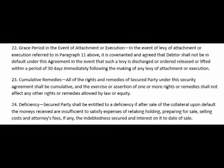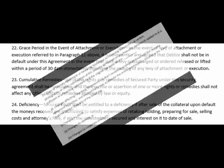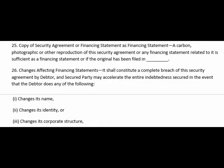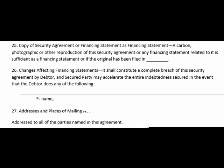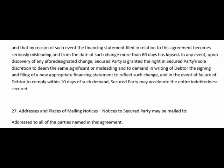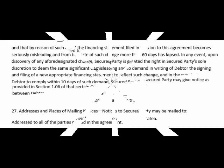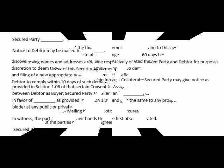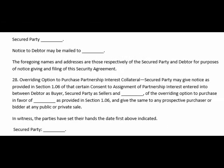In case of transferring the physical possession of anything, its value and status must be stated so that it can be evaluated at the time of return. If any penalty is set for damage or any loss, it should be clearly mentioned in the agreement. Create your own security agreement by downloading a free sample from www.contract-template.org.